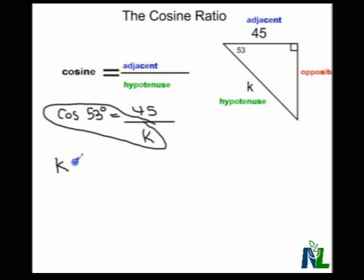We're going to end up with K multiplied by the cosine of 53 equals—and we know that cosine is over 1—so we have 45 multiplied by 1.